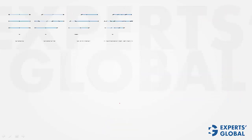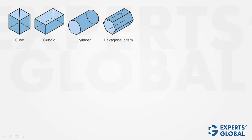Let's take some examples. Cube — the base and the top are congruent, this is a prism. Cuboid also — the base and the top are congruent. Cylinder: this is a lying cylinder. Make it stand — this side will become the base, this side will become the top, and this is a prism.